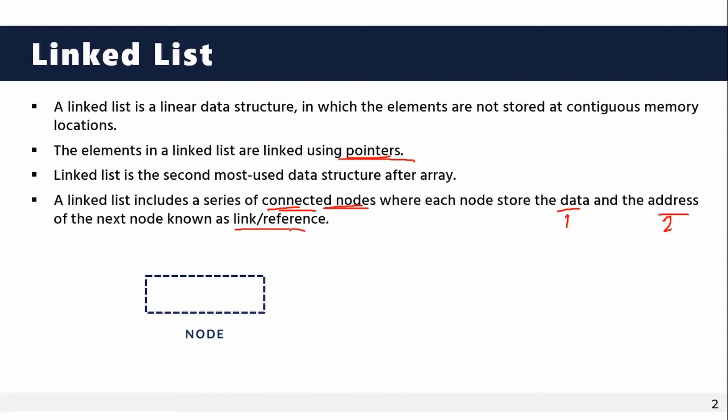The node is connected to the next node. The first part is the data, and the other part is the link connected to the next node.